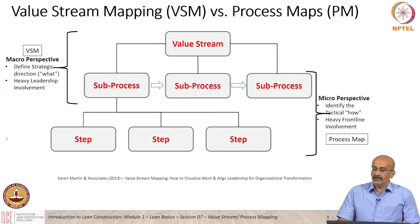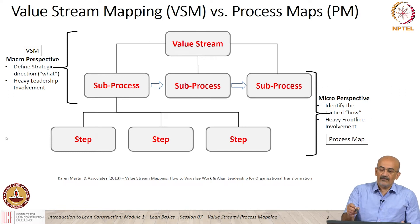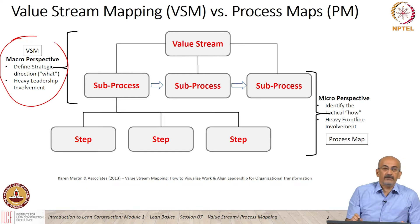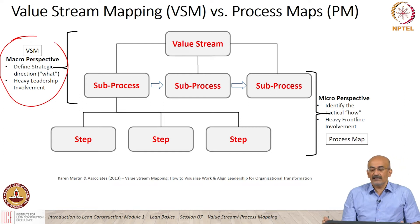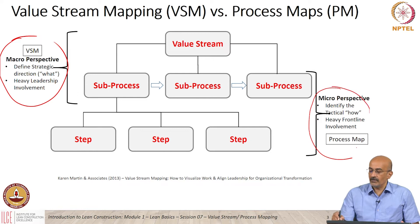If you recall this slide from the previous session, we talked about how there is a macro and a micro perspective when we look at a process. We looked at value stream mapping as being able to map the macro perspective, where we are defining strategic directions with a lot of leadership involvement. Today, we are going to look at the micro perspective and look at process mapping as a tool to map what is at the micro level.